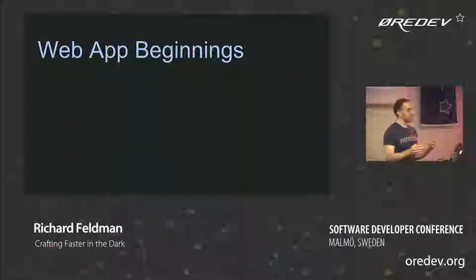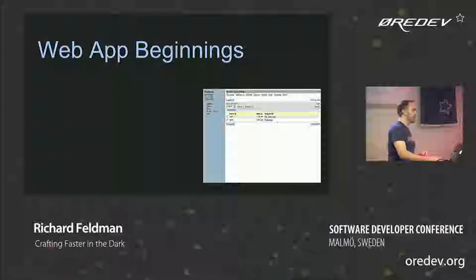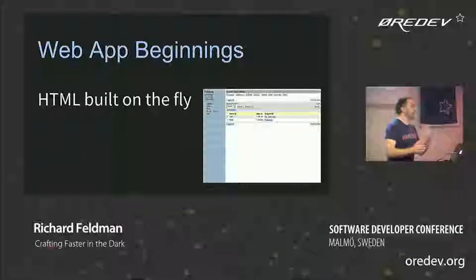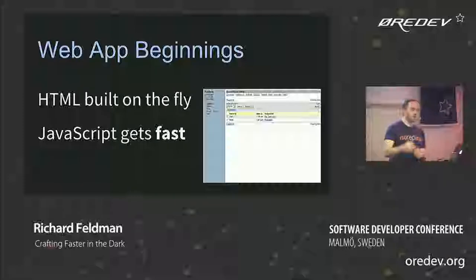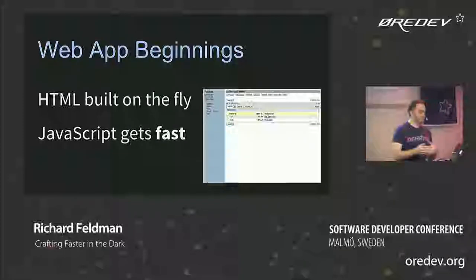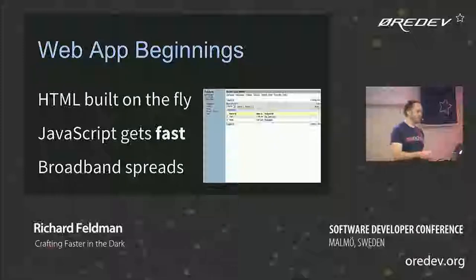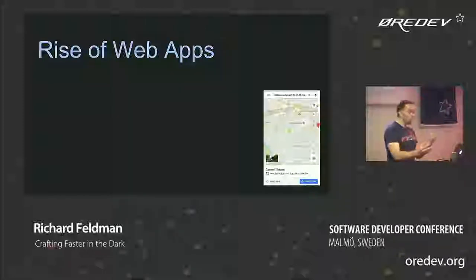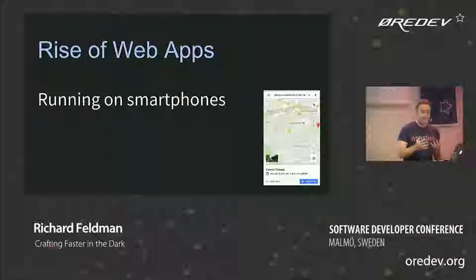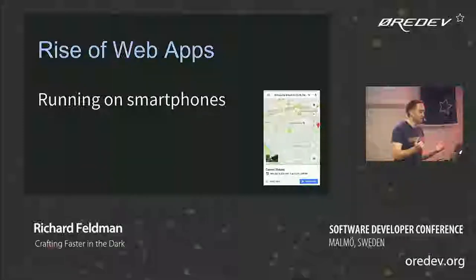The beginnings of web apps were still rendering HTML, but doing it dynamically on the fly on the server. And then JavaScript got fast, and bandwidth increased — we started to see more broadband — and this led to the rise of web apps. We started to see really rich web applications, things like a map application in the browser with no Flash. Back in the 90s that would have been completely absurd, but now we just do that on our phones.